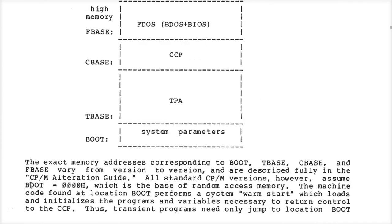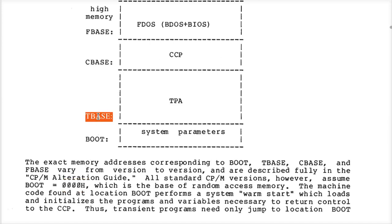Boot is usually zero and the TPA is usually 100h. By usually, they mean almost always. The only time boot is not at zero and gets pushed up — and therefore T-base goes up with it — is when you're trying to run CPM on something like a TRS-80, because the TRS-80 has ROMs down at address zero. You can't put them down there.